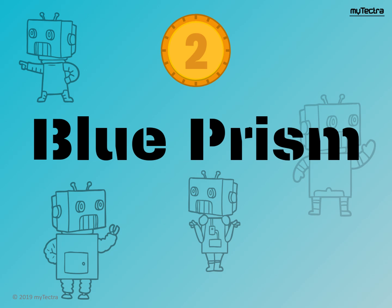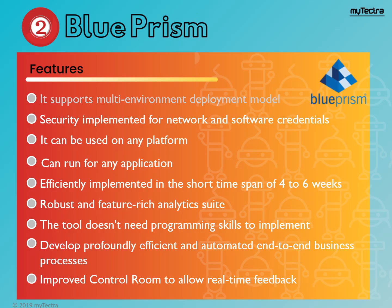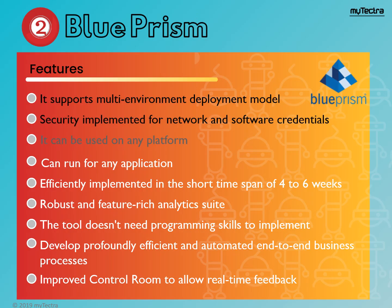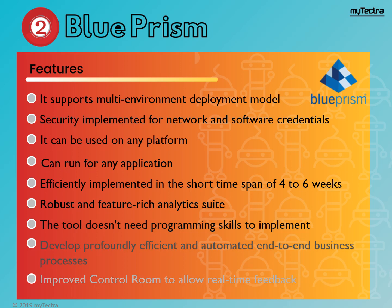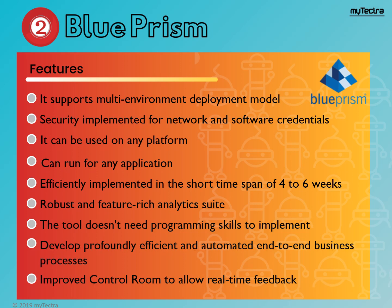Blue Prism. This RPA tool assists business processes to be prompt and cost-effective by automating manual rule-based and repetitive processes. The tool provides a flowchart-like design with drag-and-drop feature to automate numerous business processes. It can work on any platform with any application. This tool remains ideal for medium and large companies. It supports multi-environment deployment model, security implemented for network and subject credentials, and can be used on any platform. Efficiently implemented in a short time span of 4 to 6 weeks. Robust and feature-rich analytics suite. The tool doesn't need programming skills to implement. Developed professionally efficient and automated end-to-end business process. Improved control room to allow real-time feedback.